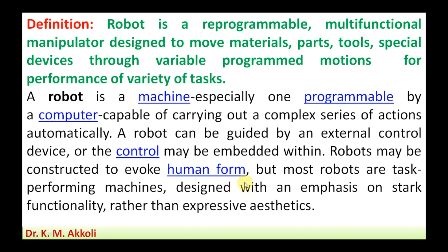Robots may be constructed to evoke human form, but most robots are task-performing machines. In industrial applications, robots are designed with an emphasis on functionality rather than expressive aesthetics — the look and appearance is not important, but whatever task and function needs to be performed, that is what matters. That is what is called a robot.